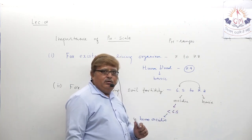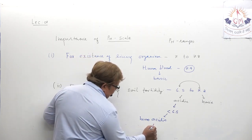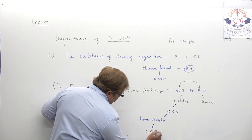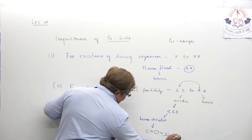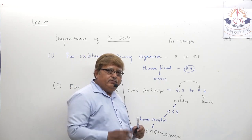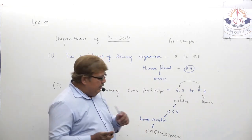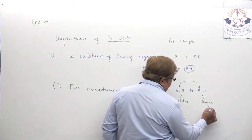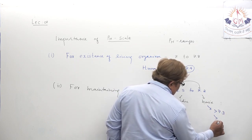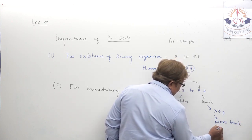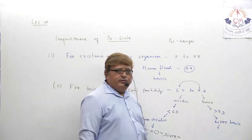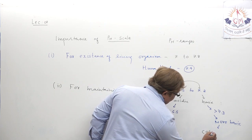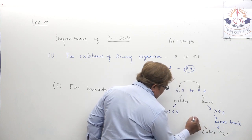Contrast to that: if the pH goes more than 7.3, it becomes more basic, which again causes a problem for the farmer. To bring the pH back to the level of 7.3, gypsum is mixed with the soil. The formula of gypsum is CaSO₄·2H₂O. You should remember this formula.